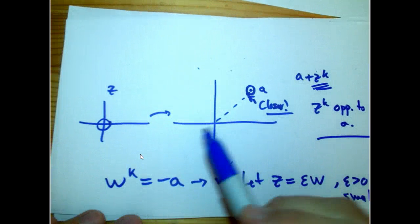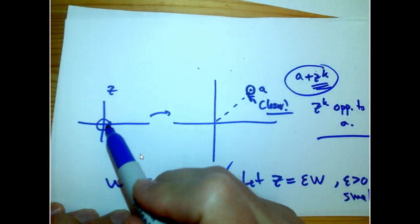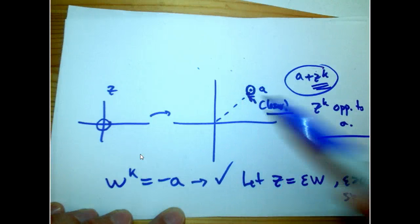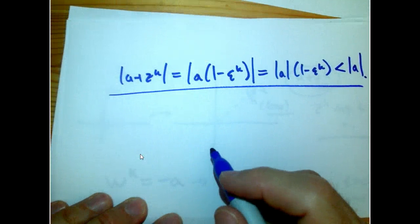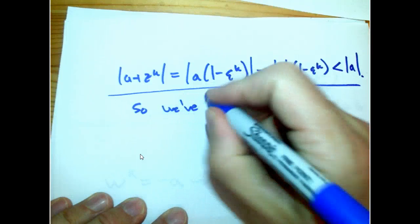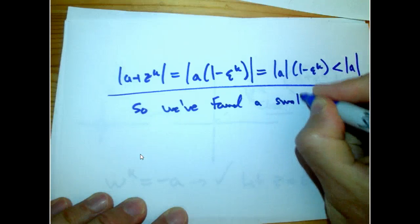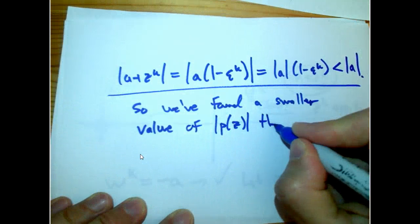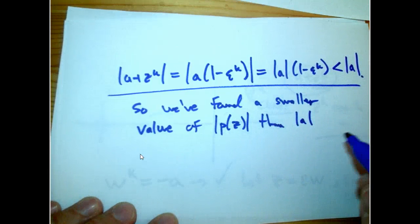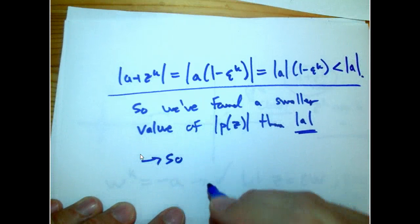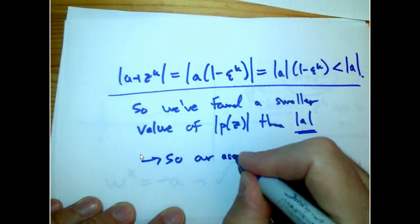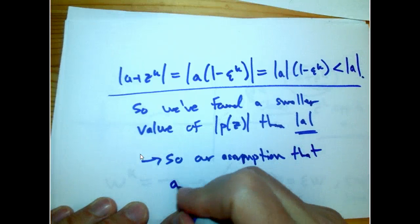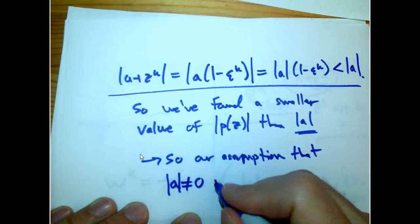So that's the algebra, but I think the picture is the key thing. We've got it down to this extremely simple polynomial, and all we needed to know is that as we walk the input around very close to the origin we get all directions around A, and certainly some of those are going to be closer. That achieves our contradiction. We've found a smaller value of magnitude P of Z than magnitude A, but we assumed that was the smallest. The only assumption we had that wasn't absolutely true was that A was not equal to zero — that assumption is false.